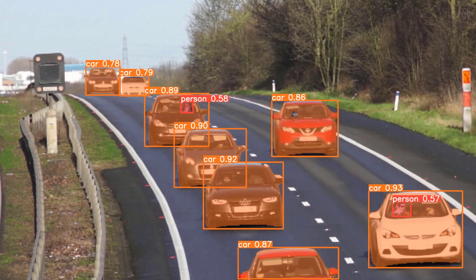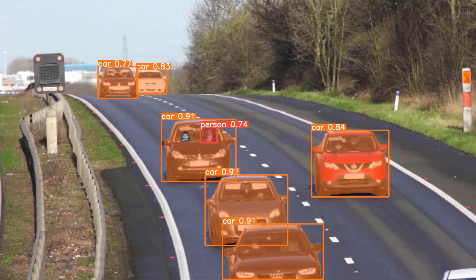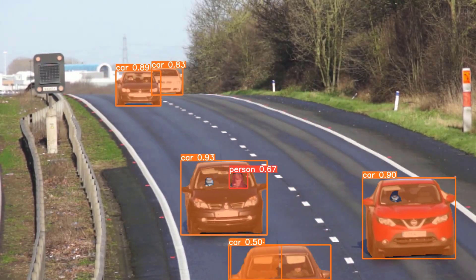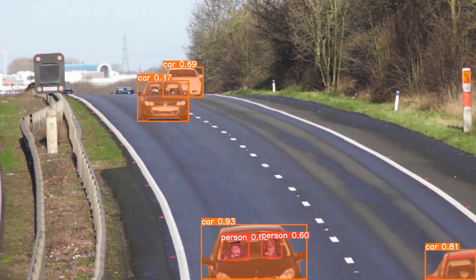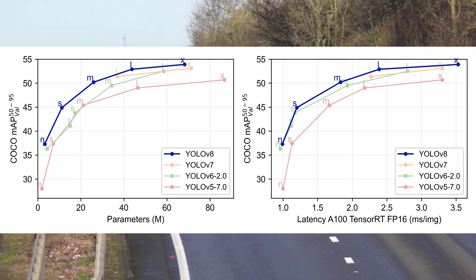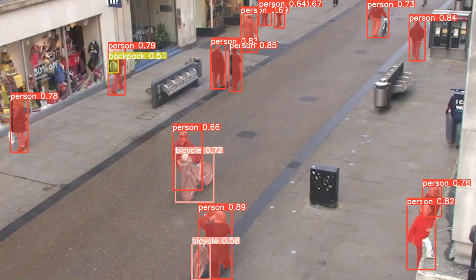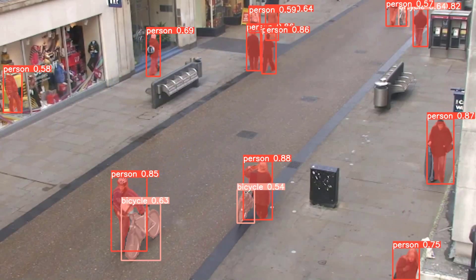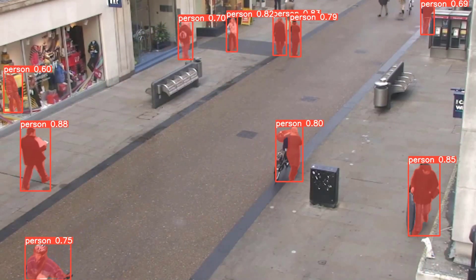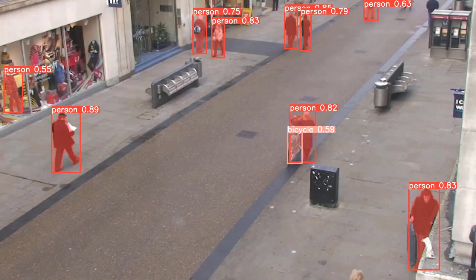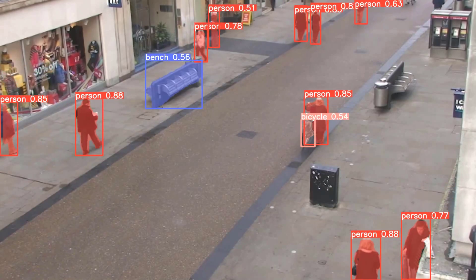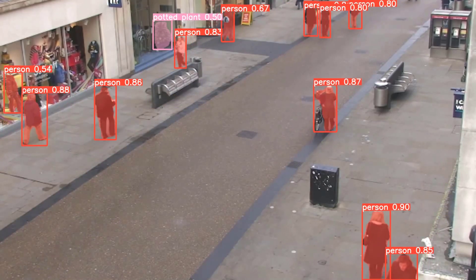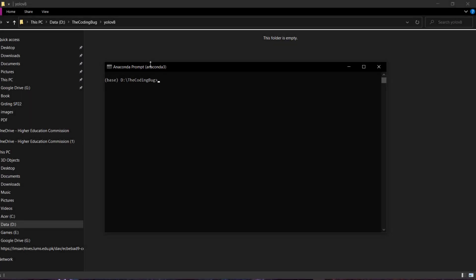Hello everyone and welcome back to the channel. In today's video we are going to run YOLOv8, which is faster and more accurate than YOLOv7. YOLOv8 is trained for object detection, image segmentation, and image classification tasks. We will run all of these tasks in this tutorial. The timestamps are given in the description. Let's get started.